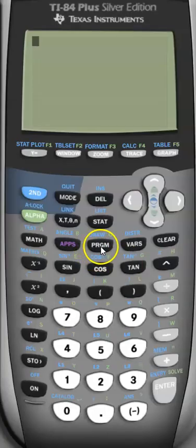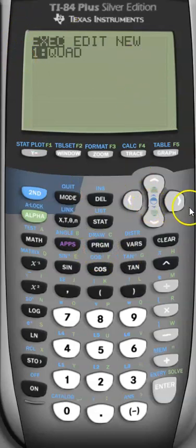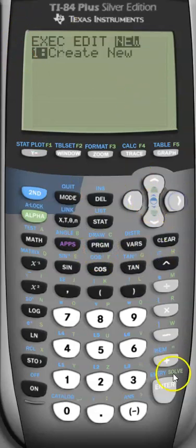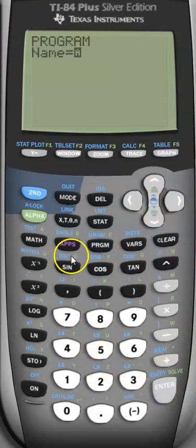So today we're actually going to put a program in. I have one in, but I want to do a new one and I want to do the slope program. So the easiest way to do this is you can kind of see these little alpha, these green letters above them. Just type in the word slope really quick.